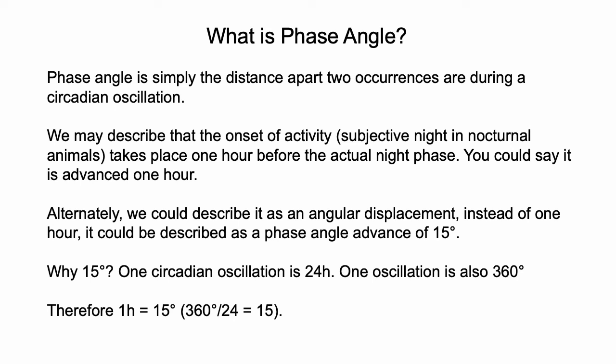So if something is one hour apart, it's 15 degrees. Two hours apart, the phase angle is 30 degrees. If you have something that is 12 hours apart, like the onset of activity and then 12 hours later, which may correspond roughly to the transition from dark to light, that would be 180 degrees difference. So when you see phase angle, you just know it's another way of saying how far apart something is in time.